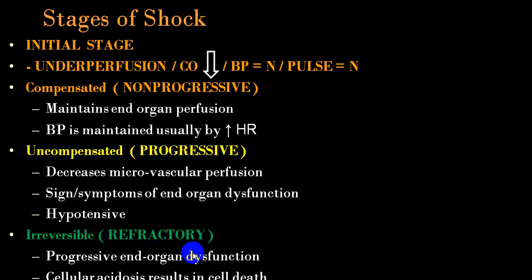Once there is progressive end-organ damage — severe damage to liver and kidney, reduced urine output, elevated creatinine, abnormal liver functions, deteriorating cardiovascular functions, falling blood pressure, cold clammy extremities, cyanosis — we call this the irreversible or refractory stage, where even standard treatment may not produce a response. Acidosis produces cellular acidosis, entry of sodium and water into cells, cellular dysfunction and cell death, resulting in multi-organ dysfunction syndrome.